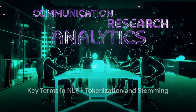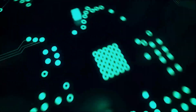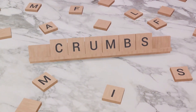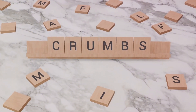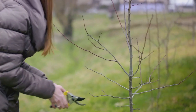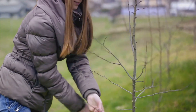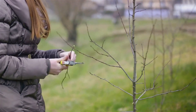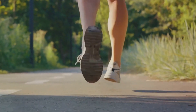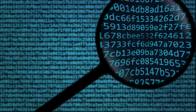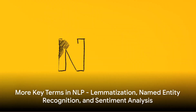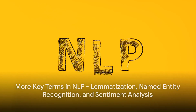Now let's uncover some NLP magic tricks, starting with tokenization and stemming. Picture this: you have a big delicious cookie of a sentence, and tokenization is like breaking that cookie into little crumbs, or tokens, each representing a word or a piece of a word. This helps the computer digest the sentence more easily, understanding each word's role. Stemming is like a language gardener trimming words down to their roots — for example, running, runner, and ran all get trimmed down to run.